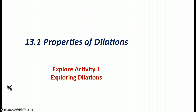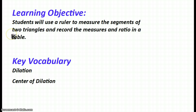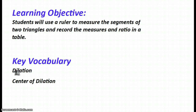The first thing we want to look at is exploring these particular dilations. You're required to use a ruler to measure the segments of two triangles and record these measures and ratio in a table. You will be required to do that. I'm going to pre-measure it and use that information to show you, but you have options to stop the video and take a look. Key vocabularies: dilation and center of dilation.